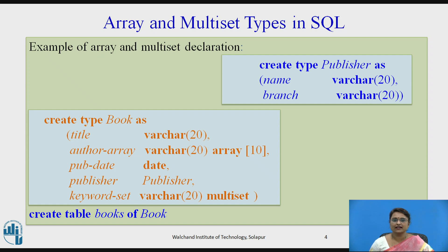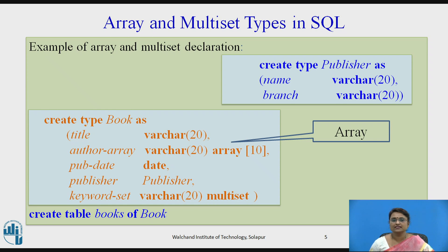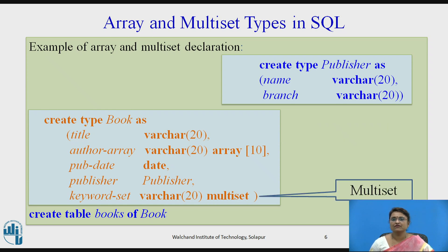Let us see how it is designed. First, we have created a type called 'book'. In this book type, title is taken as a normal character data type, author is taken as an array, and publisher is taken as a structure containing name and branch. Then the author array and the keyword set, which is a multiset containing the keywords.